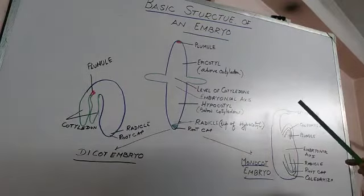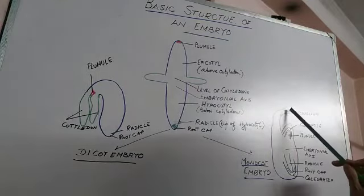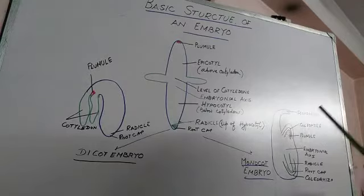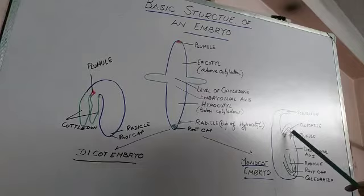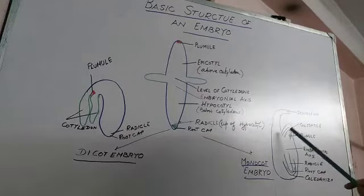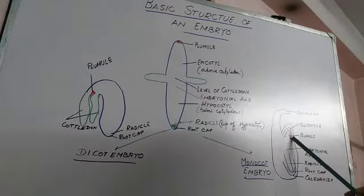single cotyledon is present. Possess only one scutellum. Plumule, which gives rise to shoot system, is covered by coleoptile.